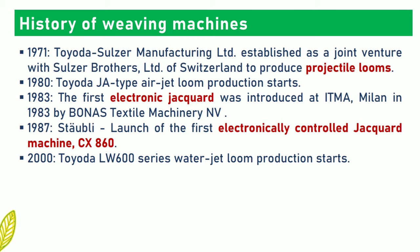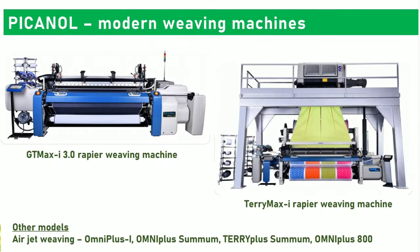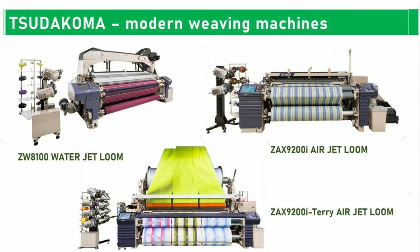In 2020, advanced-level rapier, water jet, and air jet weaving machines are available in the market. Modern high-speed weaving machines are also offered by Shudakoma, like the ZW8100i water jet loom, ZAX 9200i air jet loom, and ZAX 9200i terry air jet loom.